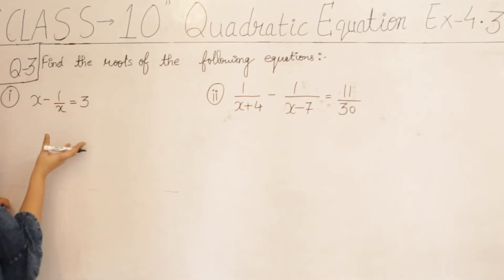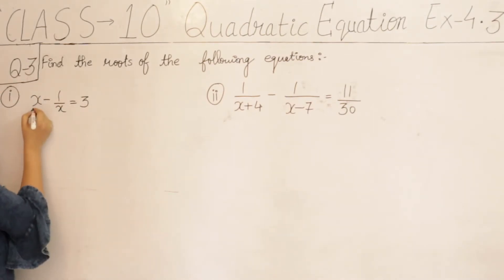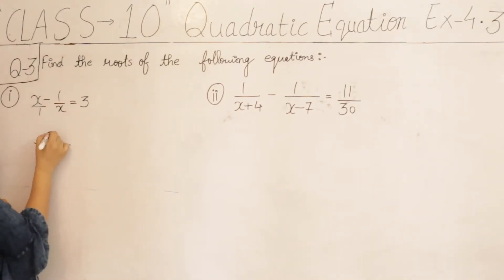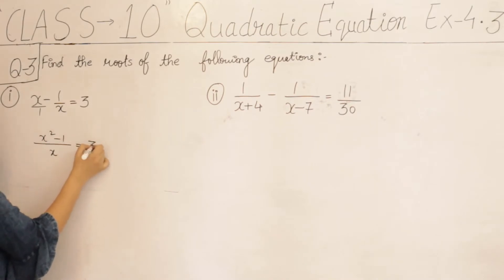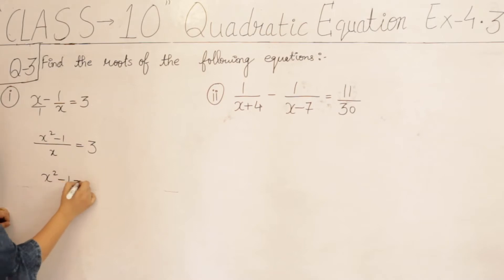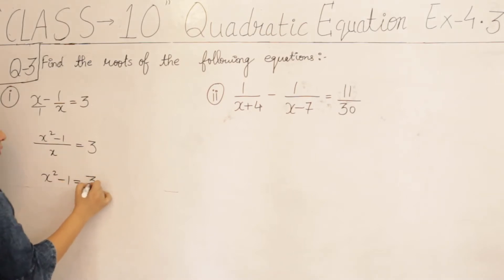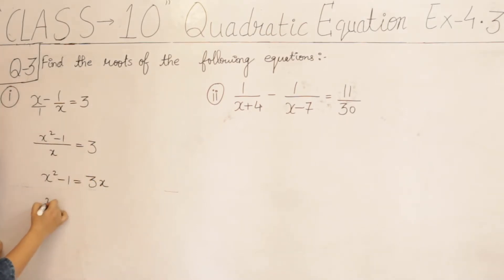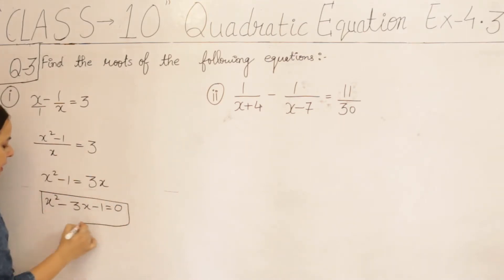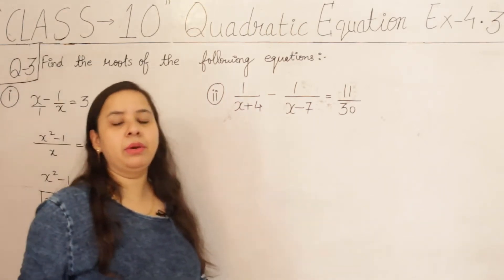How can we simplify this? You can easily see that if we take the LCM, x will multiply and we get x squared minus 1 is equal to 3. So x squared minus 1 is equal to 3x. Now you can see it is in the form of a quadratic equation.